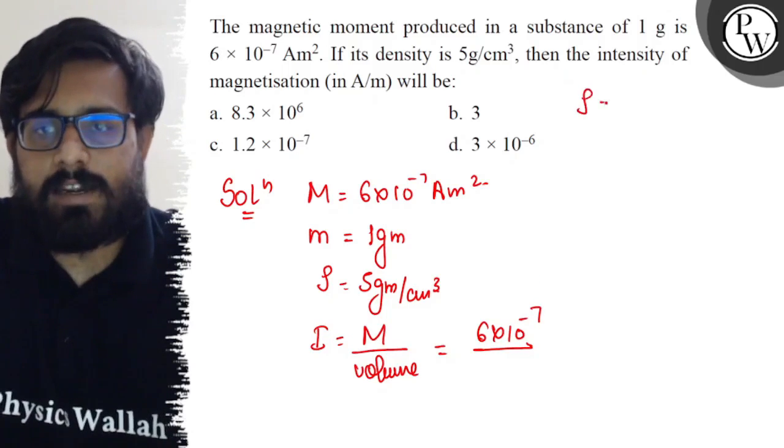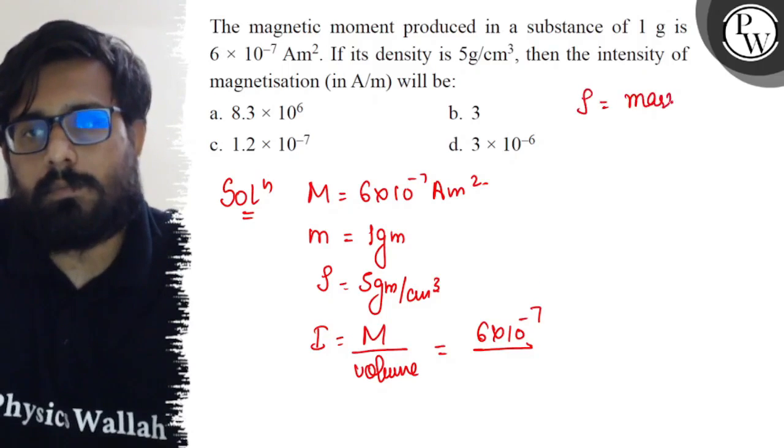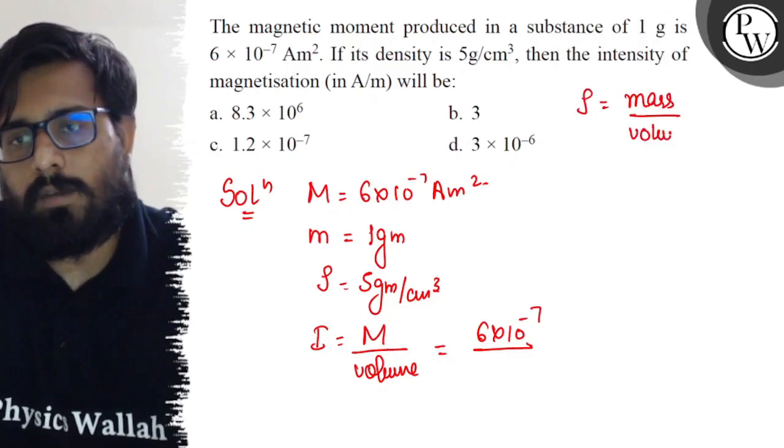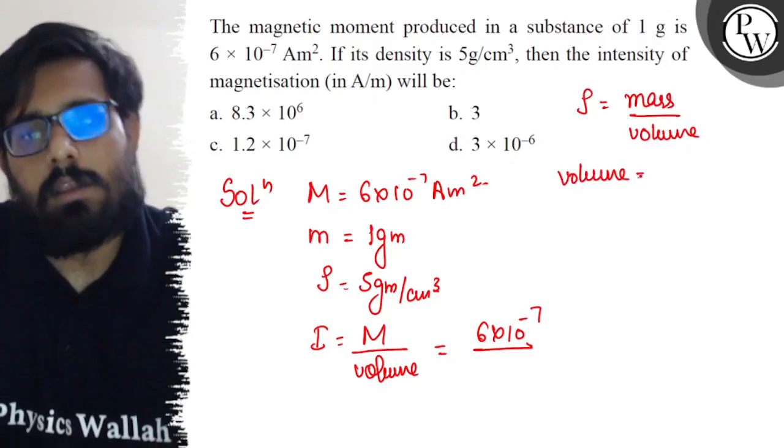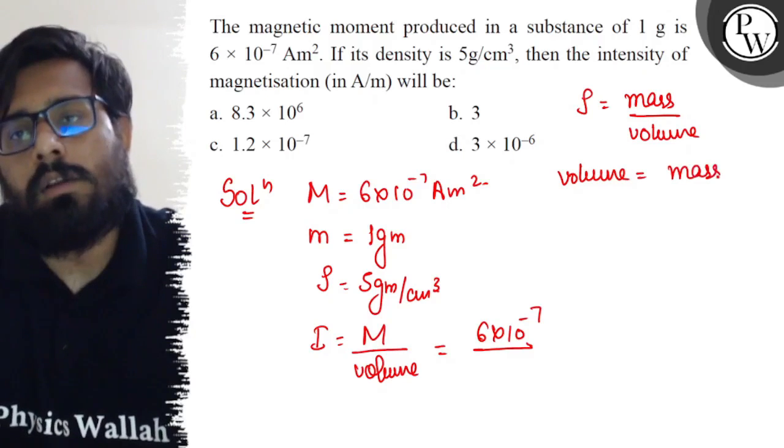We know the relation that density equals mass upon volume. From here, the volume can be written as mass divided by density.